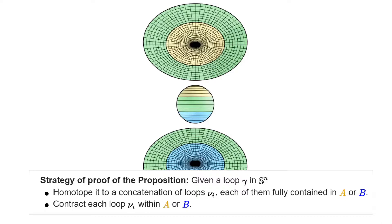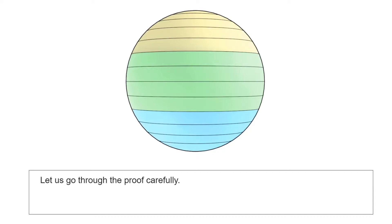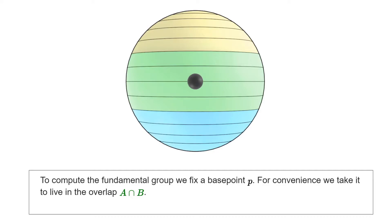Since the sphere is path-connected, it doesn't matter which base point we choose in order to compute the fundamental group. However, it is extremely convenient to choose the base point P to lie in the equatorial band that is the intersection. The reason is that we are interested in creating homotopies that present our loops as concatenations of loops coming from each of the pieces. As such, it is good that P lies both in A and in B, and thus we can look at loops based at P contained in either piece.